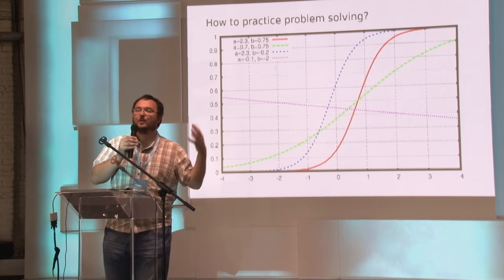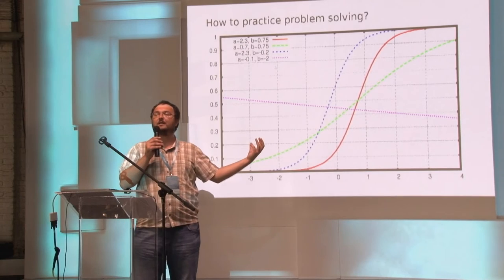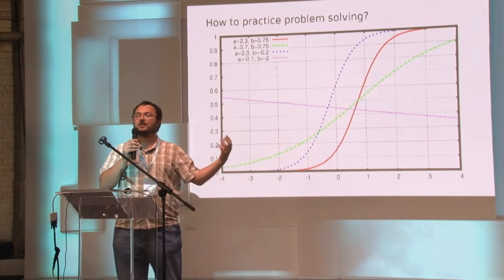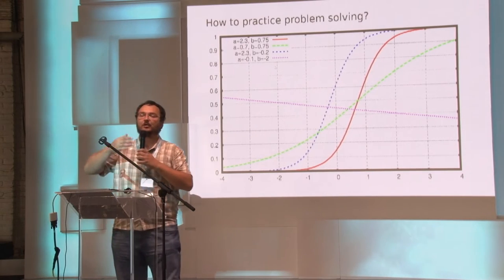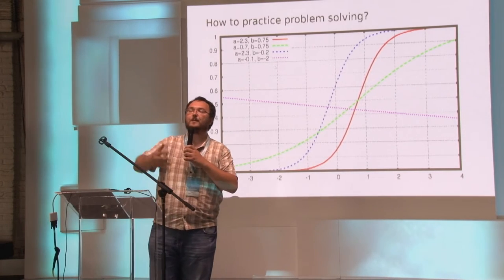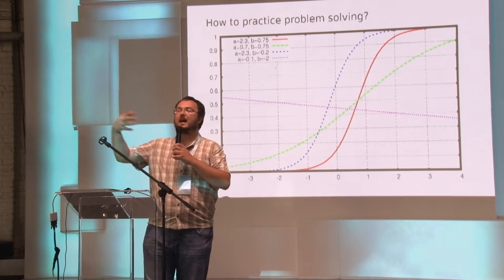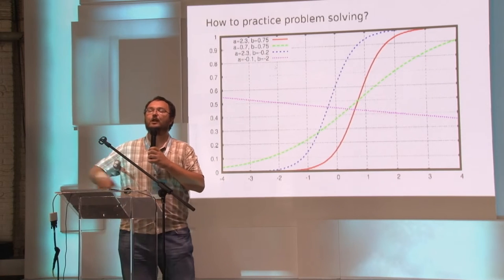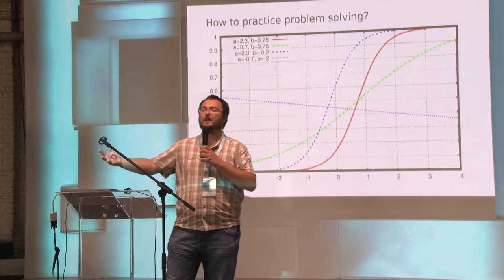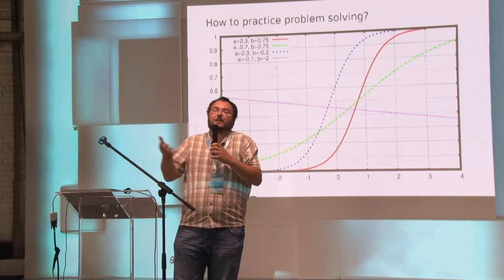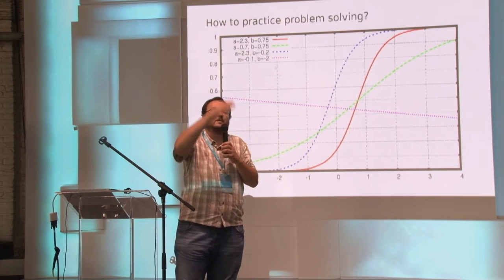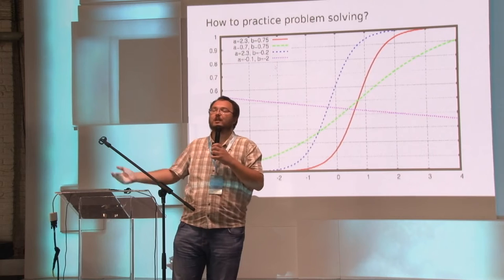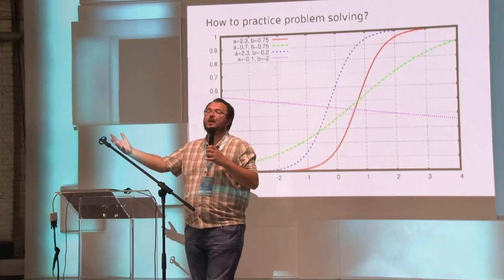This model is also interesting when you are doing testing, because if you are testing some people and you give them tasks that are too difficult, you will learn nothing about them. Nobody will solve anything — you will see a row of zeroes. You have learned nothing.